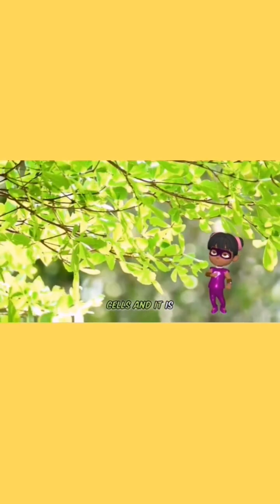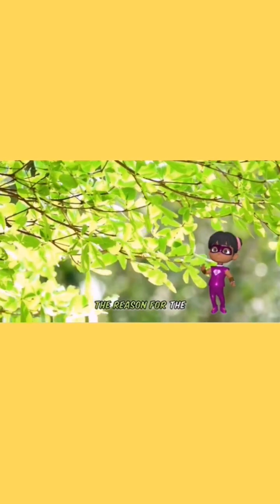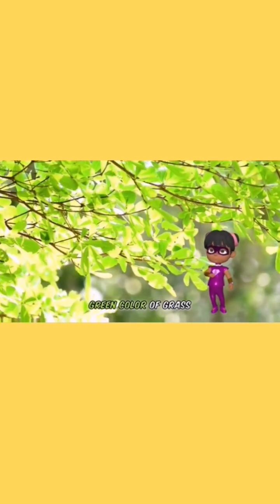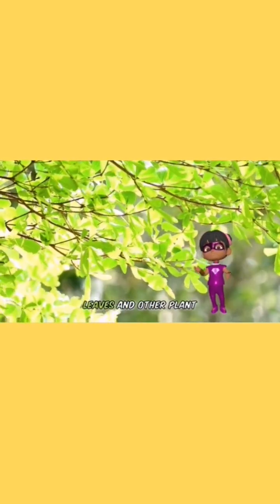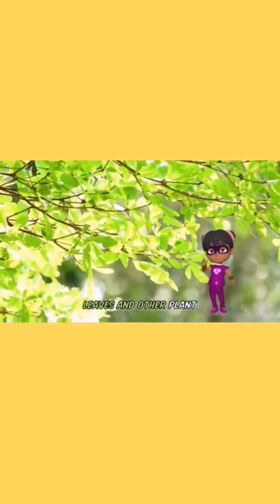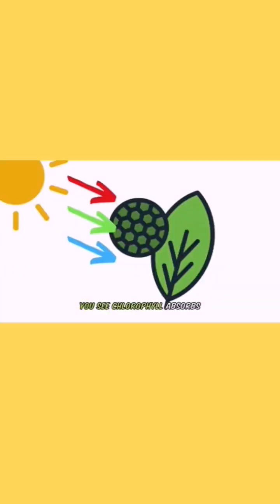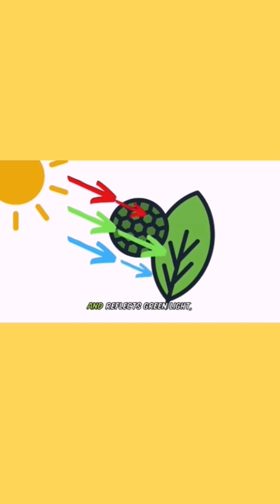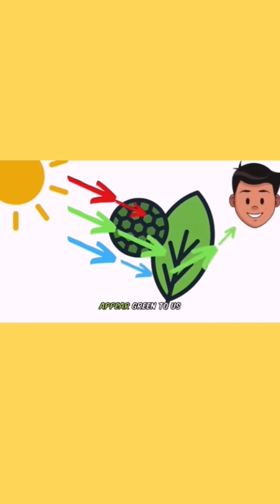Chlorophyll is a pigment found in the plant cells and it is the reason for the green color of grass, leaves, and other plant parts. Chlorophyll absorbs light mostly in the red and blue wavelengths and reflects green light, which is why plants appear green to us.